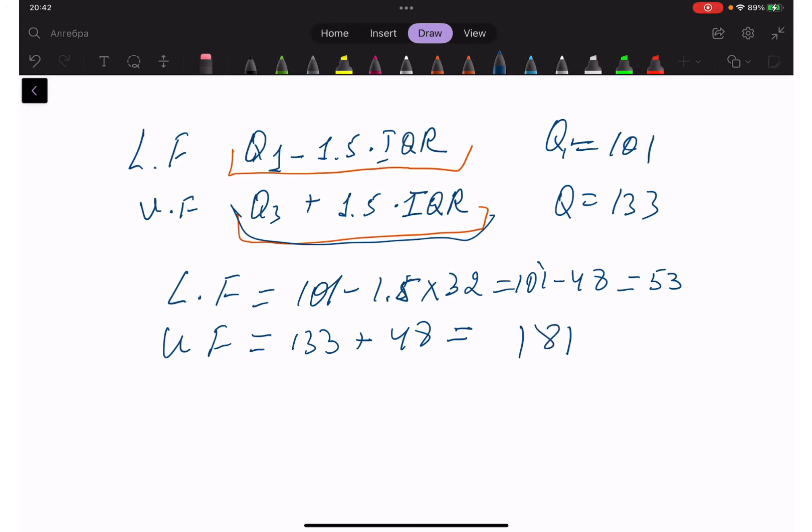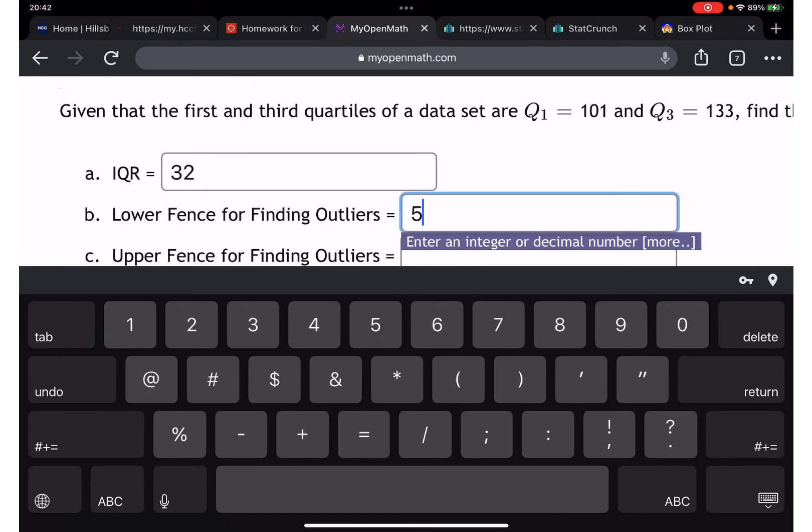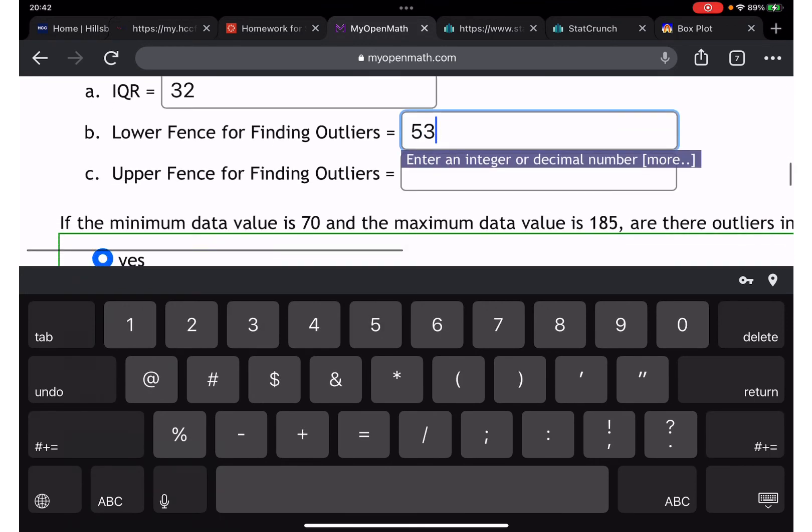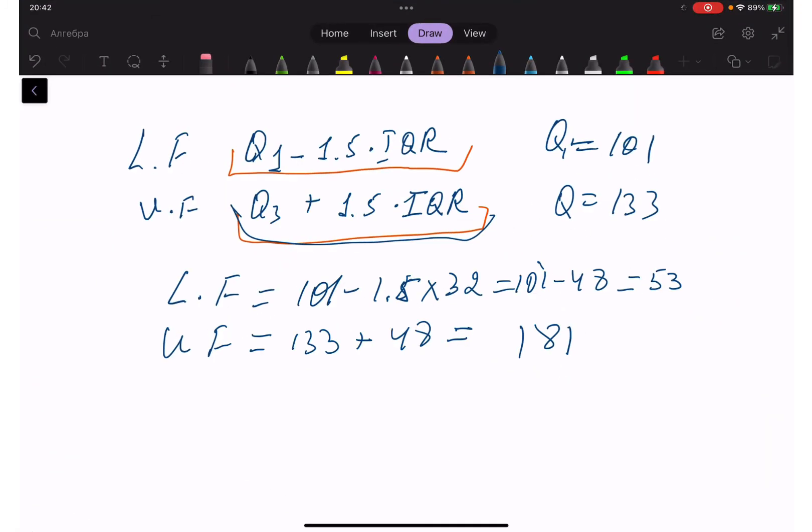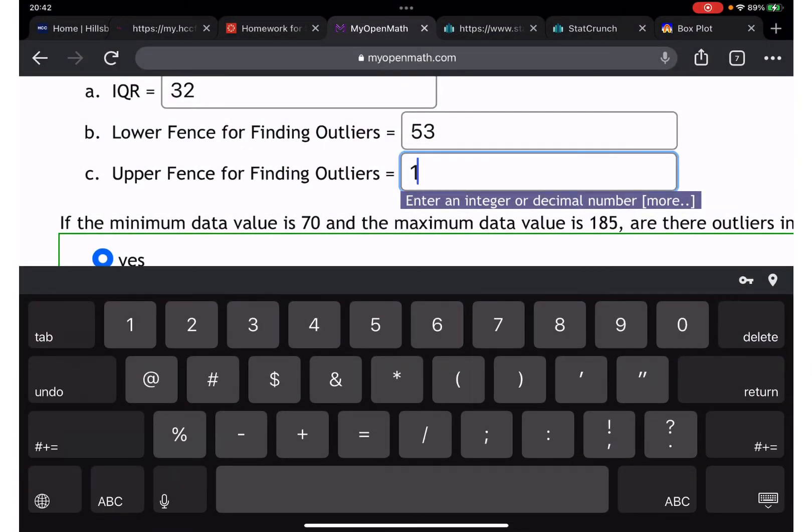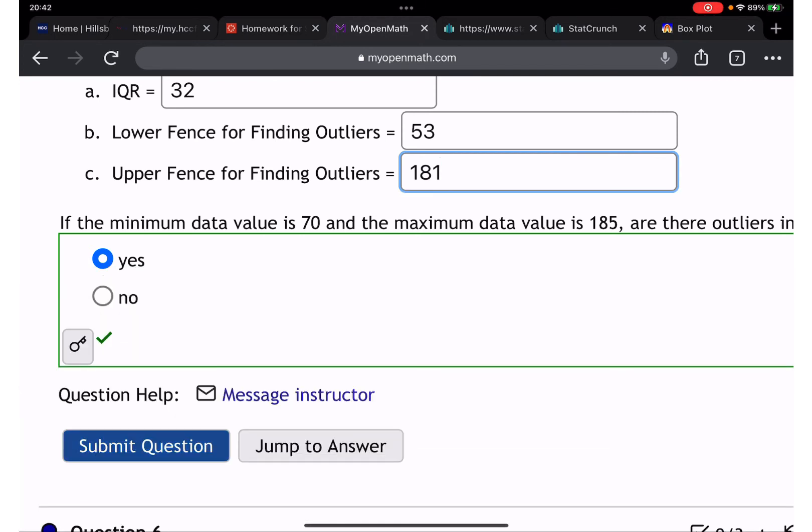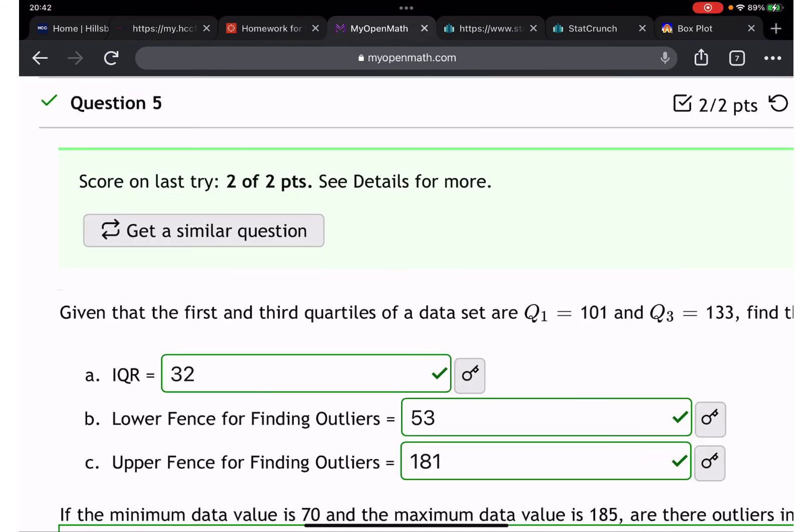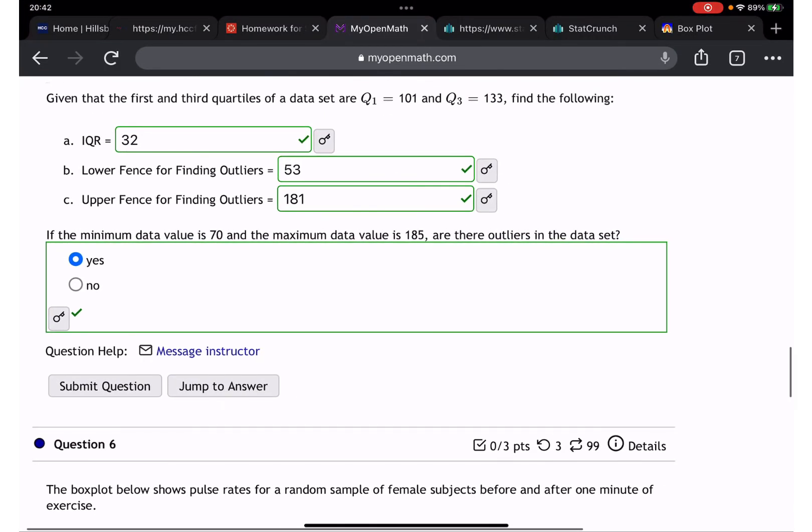Let's write down the minimum is going to be 53 and maximum is going to be 181. Let's check it. Okay, we got all correct.